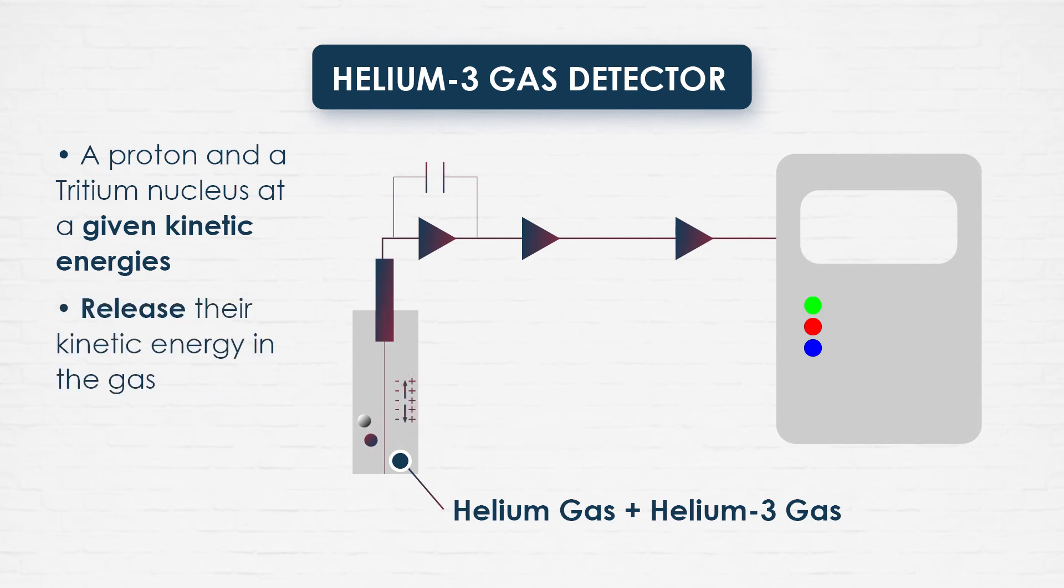Once emitted, the two products release their kinetic energy in the gas. The result is the ionization of the gas with a consequent generation of a certain amount of charge. The charge is finally collected by the electric field to create an electric signal that can be counted.